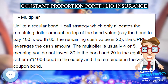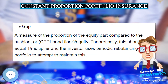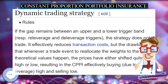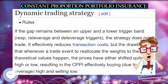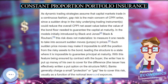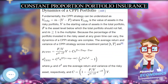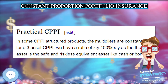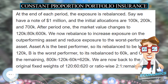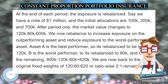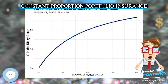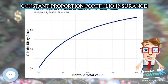CPPI was first studied by Perrold (1986) for fixed income instruments, and by Black and Jones (1987), Black and Perold (1989), and Black and Rouhani for equity instruments. In order to guarantee the capital invested, the seller of portfolio insurance maintains a position in treasury bonds or liquid monetary instruments, together with a leveraged position in an active asset which constitutes the performance engine. Examples of risky assets are a basket of equity shares or a basket of mutual funds across various asset classes.